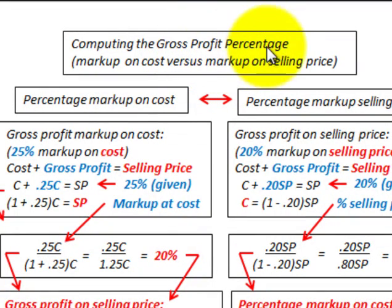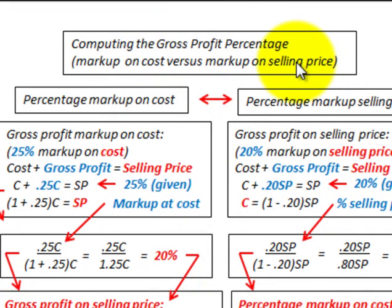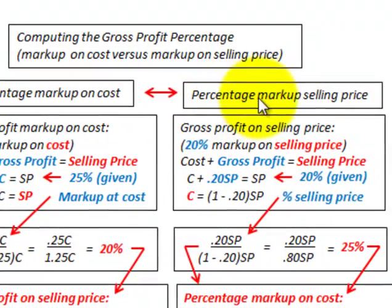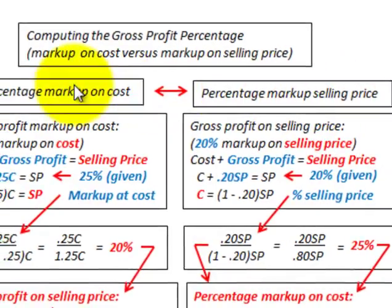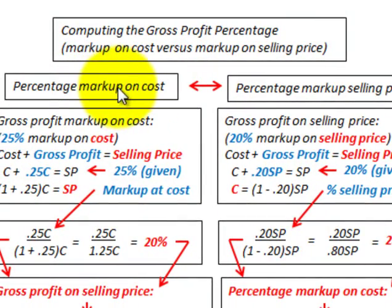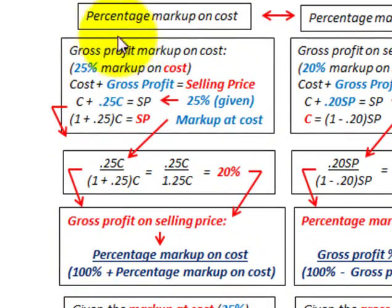Here we're going to be computing the gross profit percentage in two ways. We're going to be looking at the markup on cost versus a markup on our selling price. Knowing one of the percentages — either markup on cost or markup on selling price — you can determine the other. Let's start with gross profit using markup on cost.